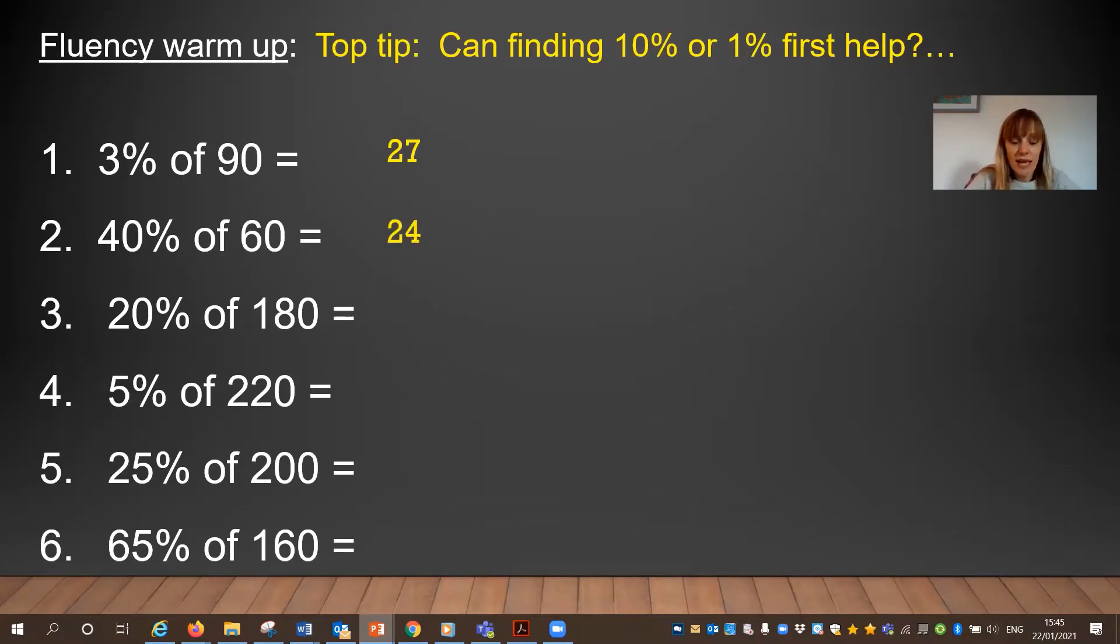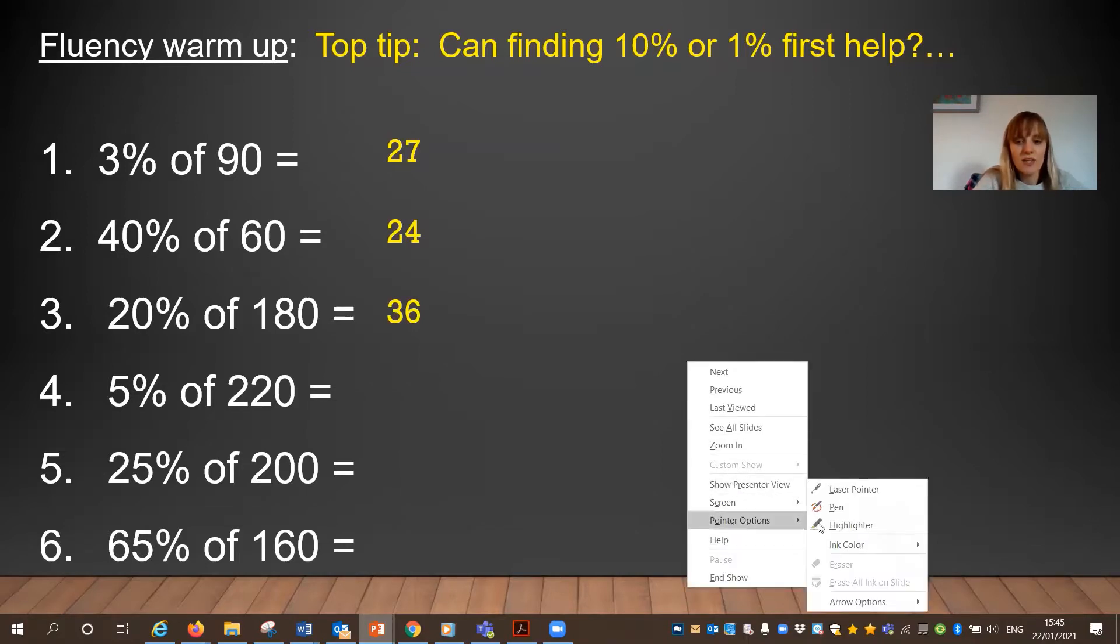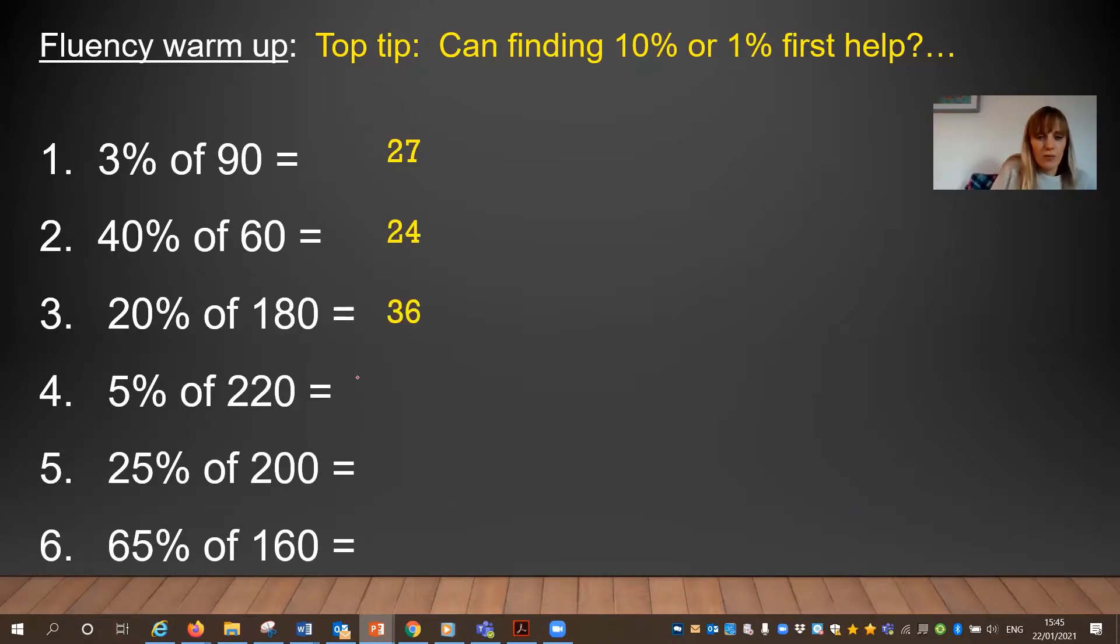20% of 180 I would find 10% first which is 18 and then I've got to times that by 2 to give me 36. Now 5% of 220 I would still find 10% for this one and I would find 10% of 220 which would give me 22 and then in order to find 5% I would have to halve that. So I would find 10% first which would be 22 and then to find 5% I would halve my 22 which would give me an answer of 11.